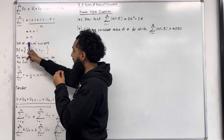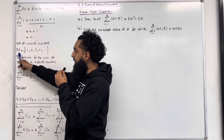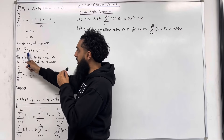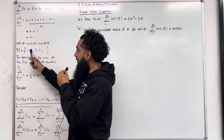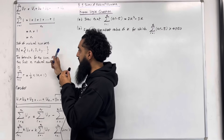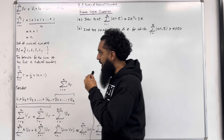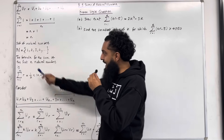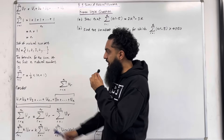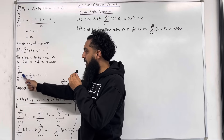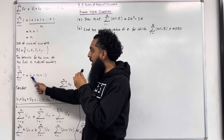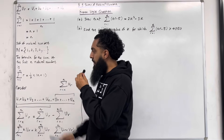The set of natural numbers is denoted by this symbol. It is the set consisting of positive whole numbers: 1, 2, 3, 4 and so on. The formula for the sum of the first N natural numbers is given by the summation from R equal 1 to N of R, which is equal to a half N lots of N plus 1.